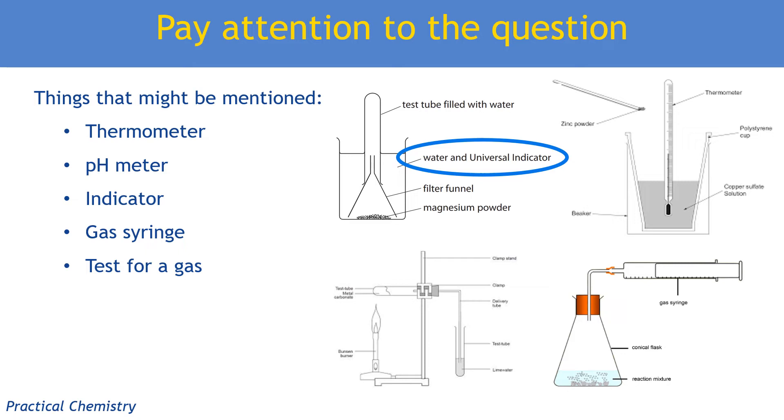So you may get unfamiliar reactions that you don't know, either because you haven't learned them or because they're just not on your syllabus, in which case use things like the equation. Look for coloured substances that we just talked about and look for changes of state. So for example, if you see a solid in the reactants and it's not in the product, then you can talk about that solid disappearing during the reaction.